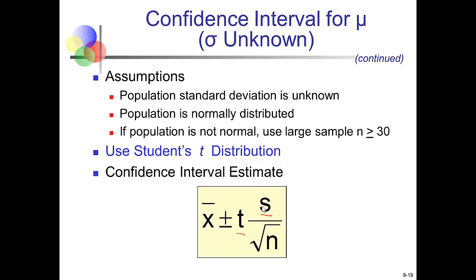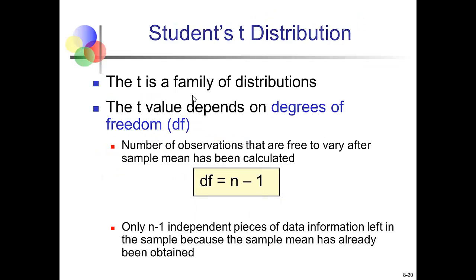The calculation still uses the sample mean, a critical value, and a standard error based on the sample—the margin of error is subtracted to get the lower bound and added to get the upper bound. The T distribution is actually a whole family of distributions, unlike the single standard normal distribution. Which T distribution we're on depends on the degrees of freedom, which determines the T critical value. Degrees of freedom is n minus 1—the number of observations free to vary after the sample mean has been calculated.